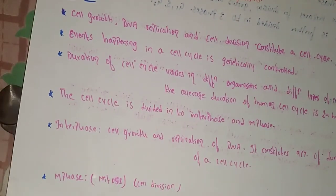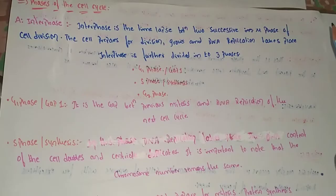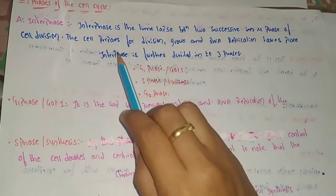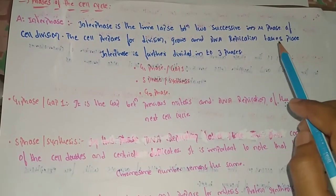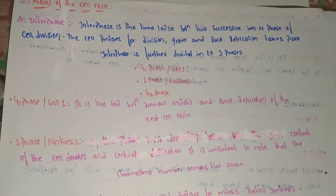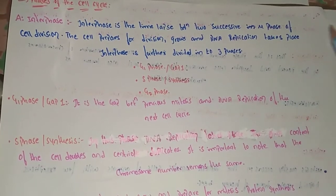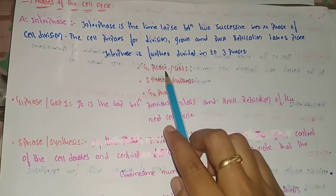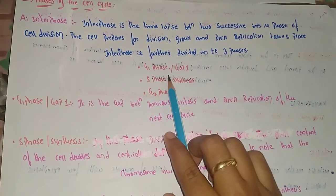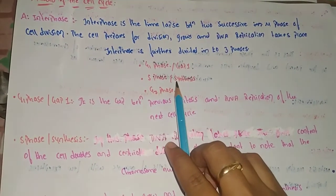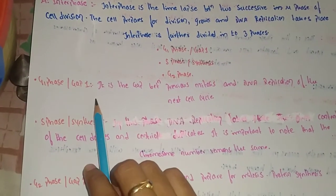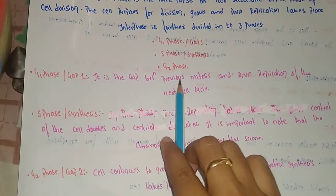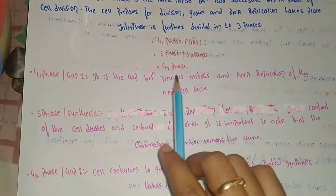During interphase, the cell prepares for division — cell growth and DNA replication take place. Interphase is further divided into three phases: G1 phase (Gap 1), S phase (Synthesis phase), and G2 phase (Gap 2).